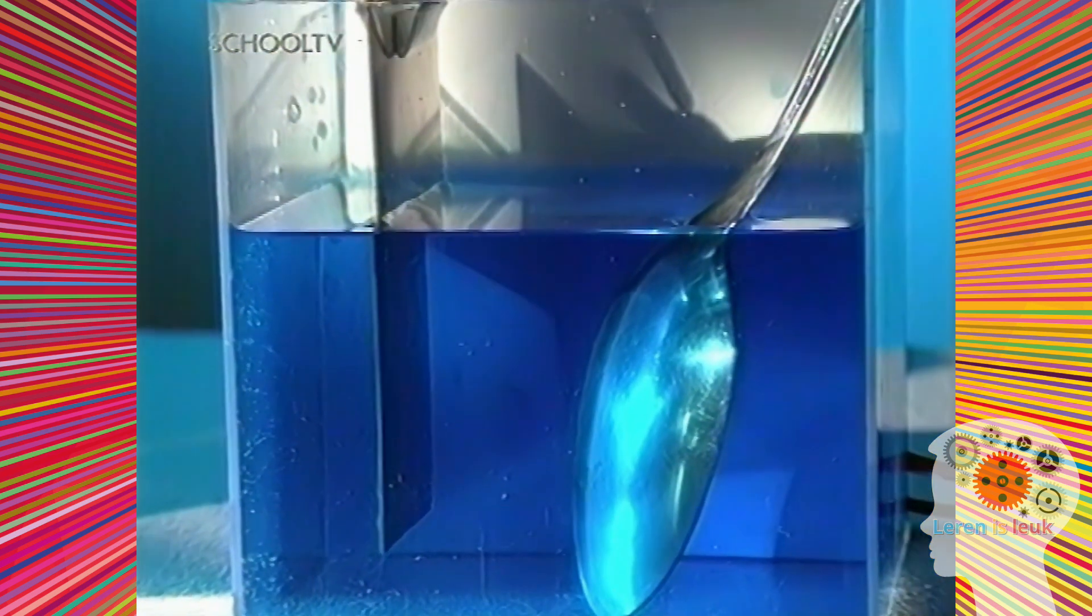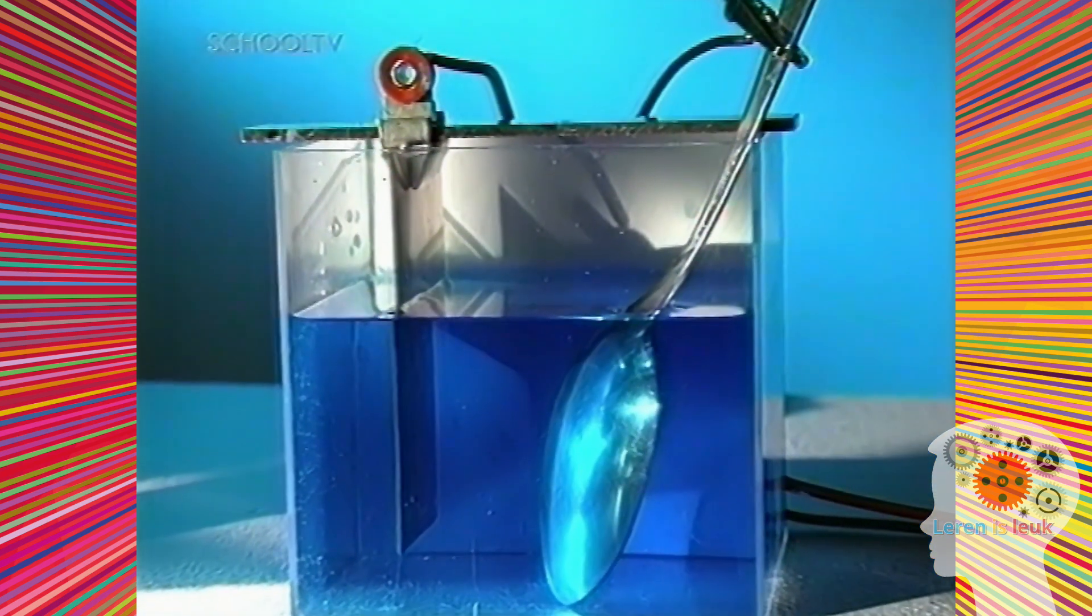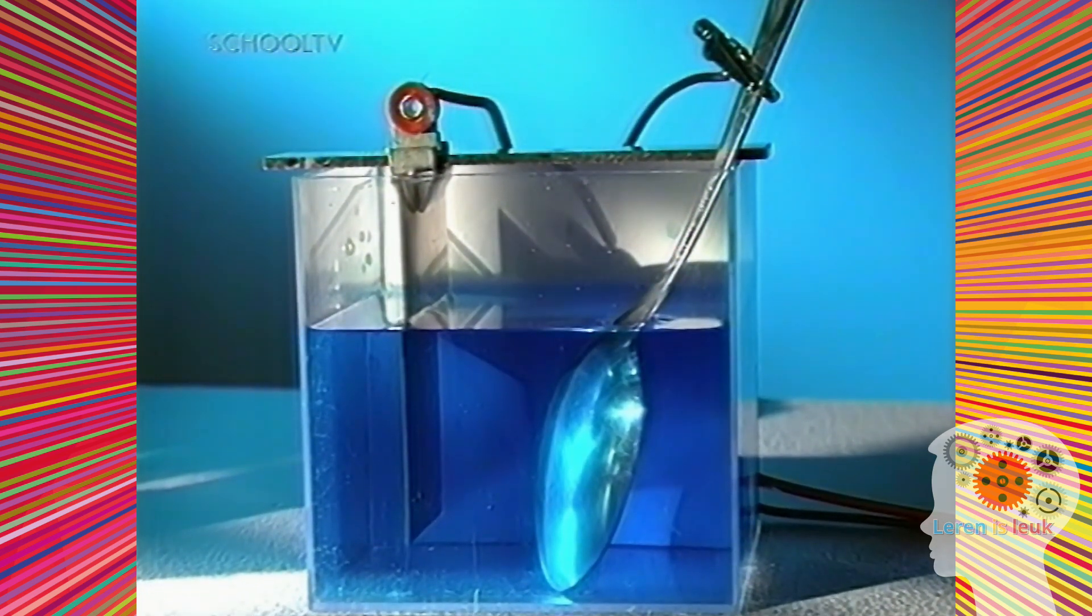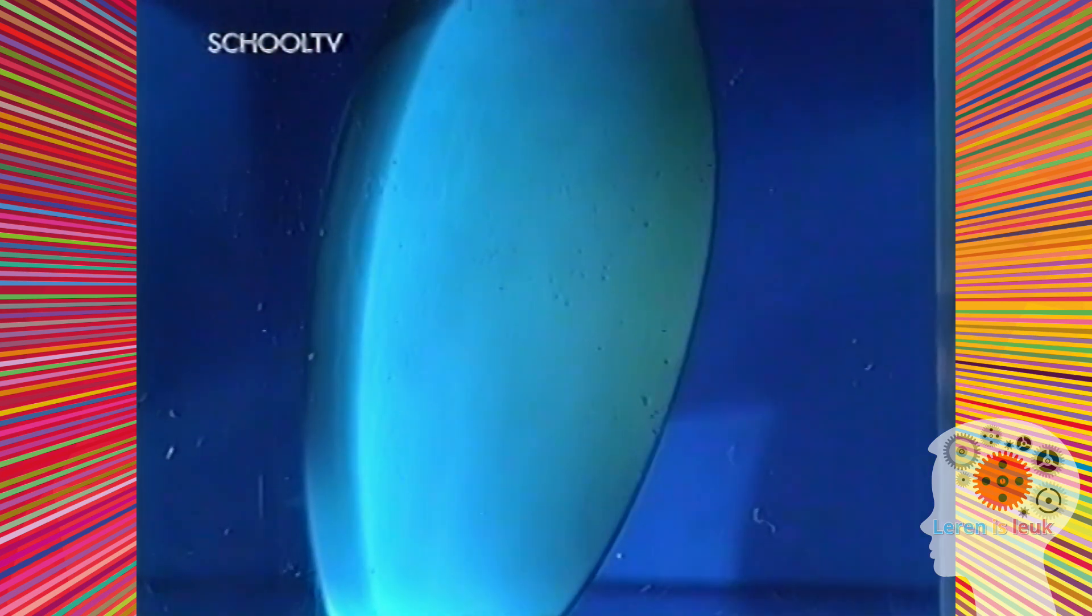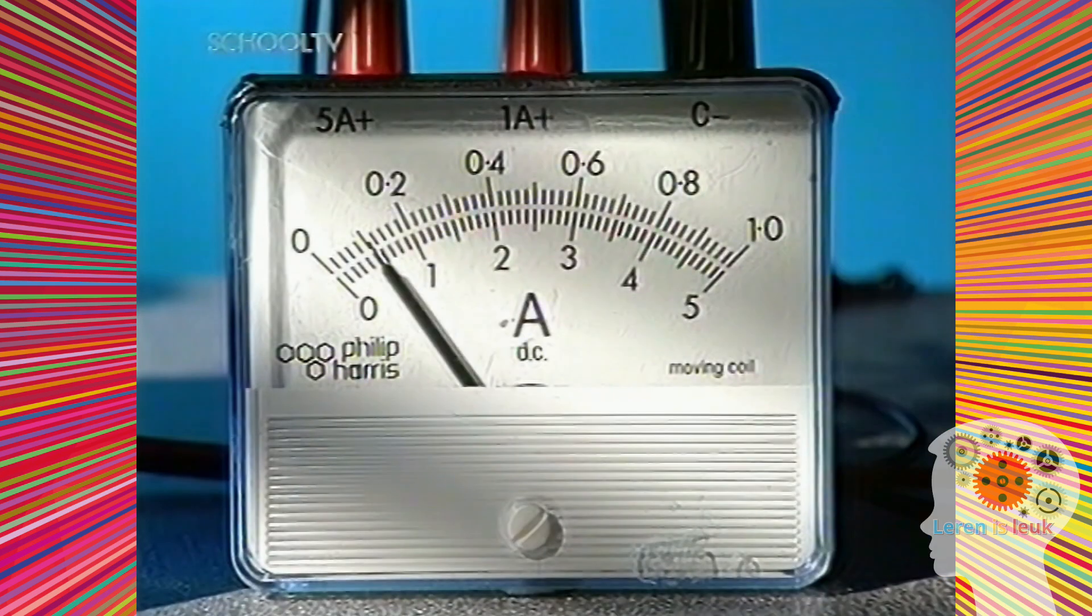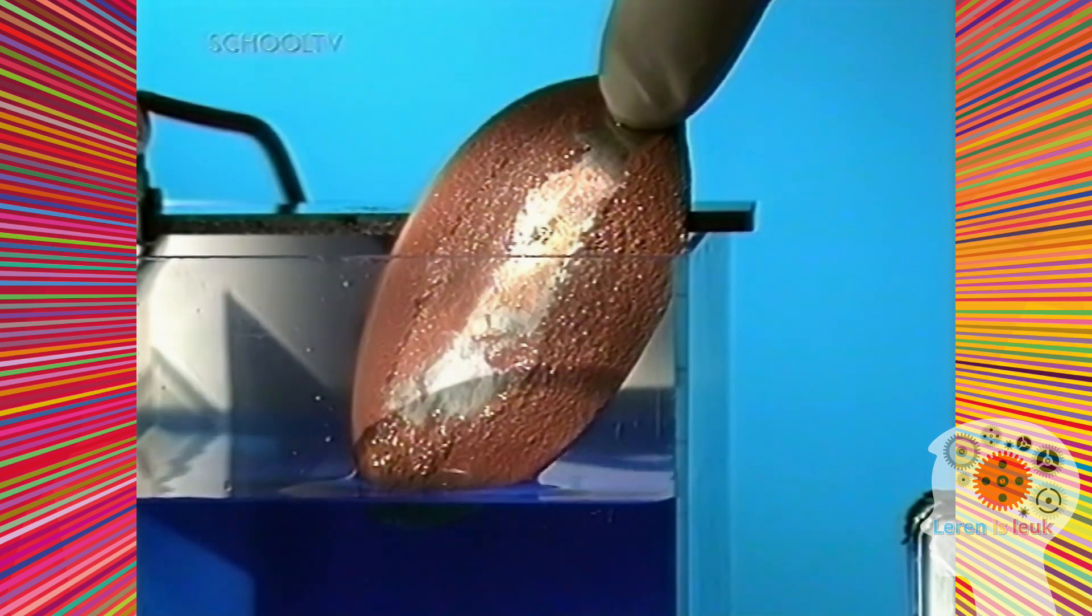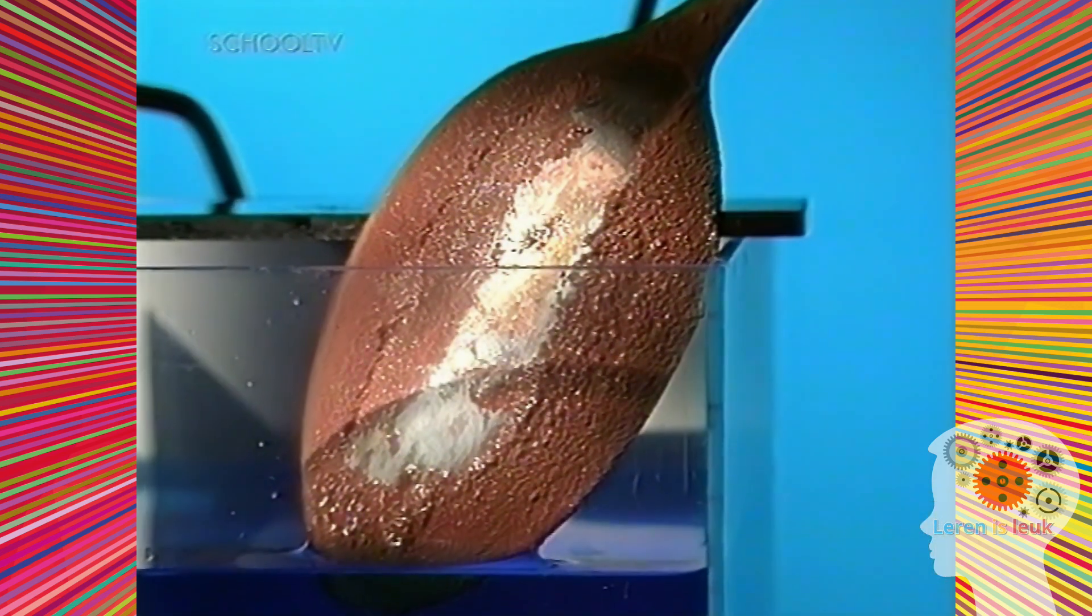Om een voorwerp met koper te galvaniseren, kun je net zo'n opstelling gebruiken. We gebruiken weer een kopersulfaatoplossing. De positieve elektrode is van koper. Maar de negatieve elektrode is nu het voorwerp dat gegalvaniseerd moet worden. Na enkele minuten is de lepel bedekt met een mooi koperlaagje. Verhoog de stroom nu maar eens en kijk wat er dan gebeurt. Er ontstaat een dikkere koperlaag, maar die laag is van slechte kwaliteit. Je kunt hem er zo afvegen. De stroomsterkte die bij galvaniseren wordt gebruikt, is heel belangrijk.